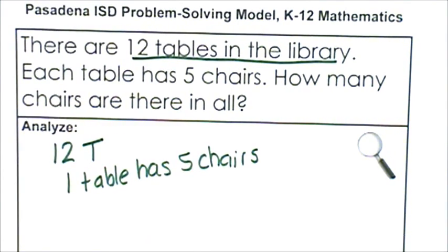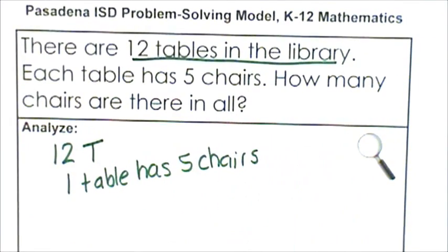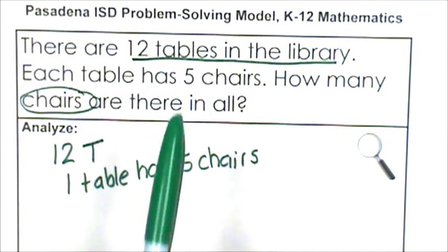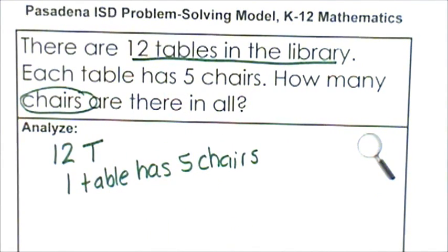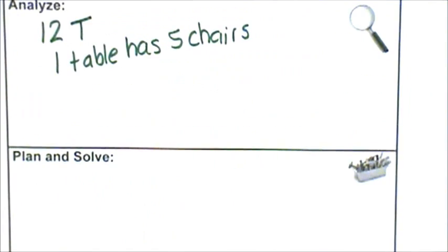What is the problem asking me to determine? Let me read the question again. How many chairs are there in all? The problem is asking me for chairs in all — that means all the chairs at all of the tables in the library. The problem tells me there are 12 tables, but it doesn't tell me how many chairs are in the library. All it tells me is that one table has five chairs.